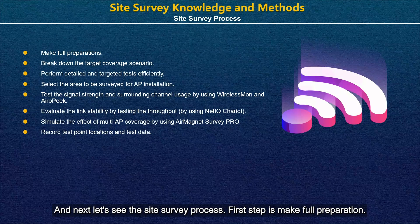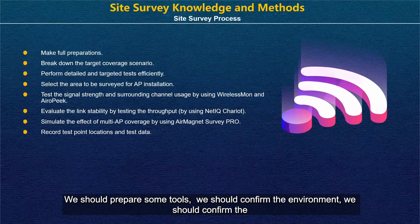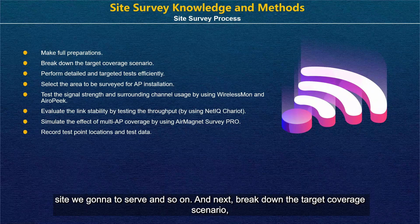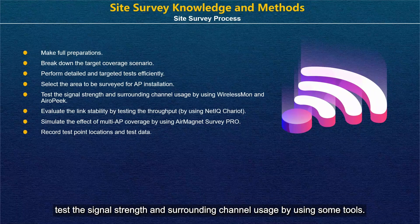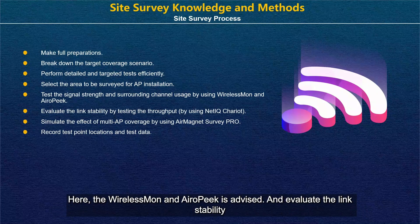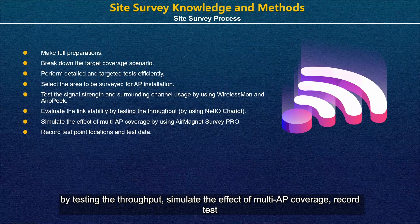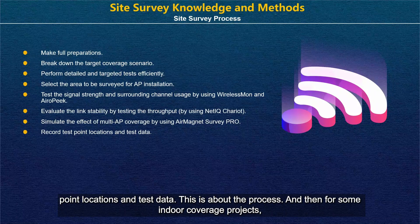Now let's see the site survey process. The first step is to make preparations — prepare some tools, confirm the environment, and confirm the site we are going to survey. Next, break down the target coverage area and perform detailed and targeted tests efficiently. Select the area for AP installation, test the signal strength and surrounding channel usage using tools — the wireless scanner and AiroPeek are advised. Evaluate link stability by testing throughput, simulate the effects of multi-AP coverage, and record test point locations and test data.